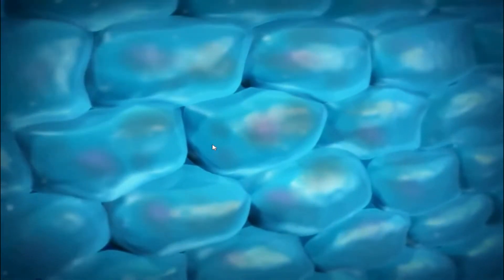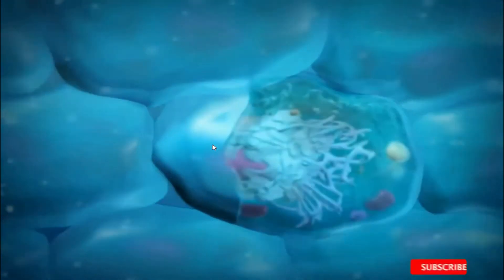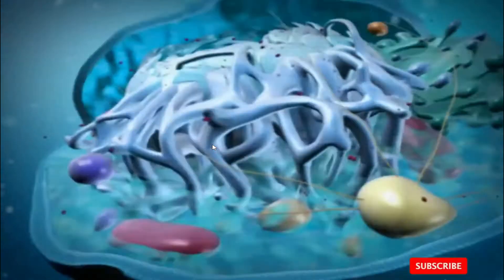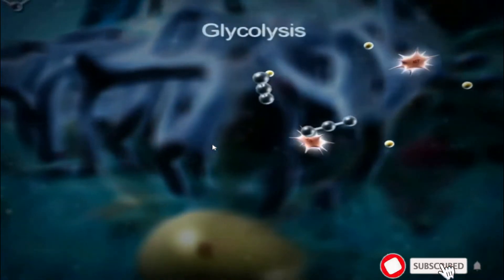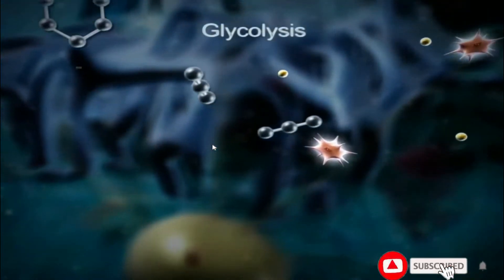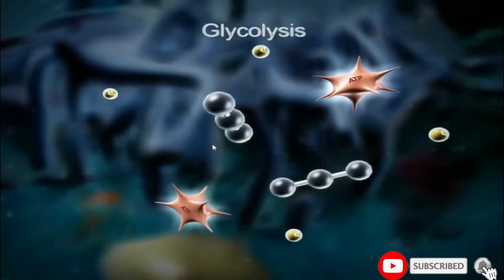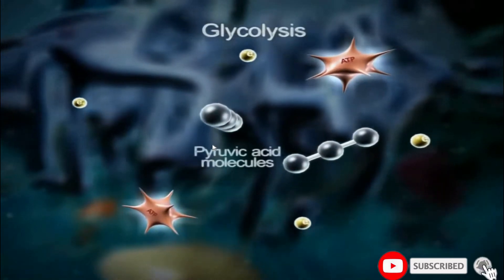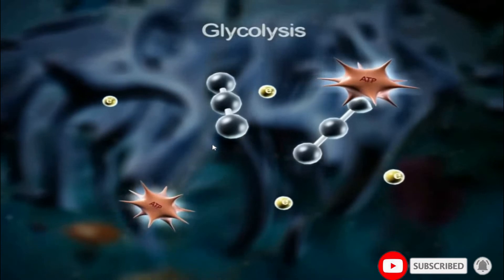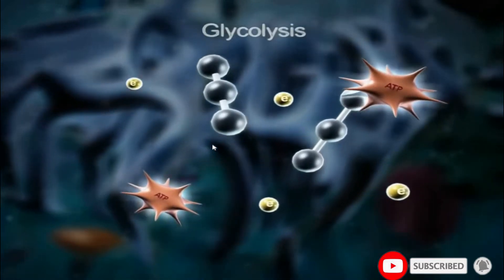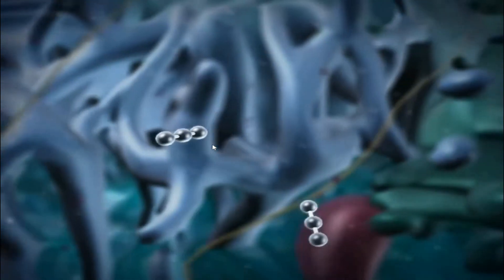Cellular respiration is comprised of three main steps. It begins when glycolysis breaks down a six-carbon glucose molecule, producing two three-carbon pyruvic acid molecules and a net gain of two ATP molecules, which the body uses as cellular energy. High-energy electrons are released.